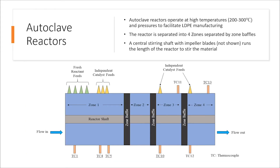The free radical polymerization process requires an environment with high pressures and temperatures. Autoclave reactors are commonly used in industrial applications to perform this process. Typical environments within the reactor can see temperatures ranging from 200 to 300 degrees Celsius. The hypothetical reactor modeled in CFD for this study is separated into four zones by zone baffles. The zone baffles are attached to the central stirring shaft. As material passes through the zone, it flows through a gap between the baffle and the reactor wall into the next zone. The baffles and other paddles on the stirring shaft help mix the material and ensure a complete conversion of monomer to polymer.